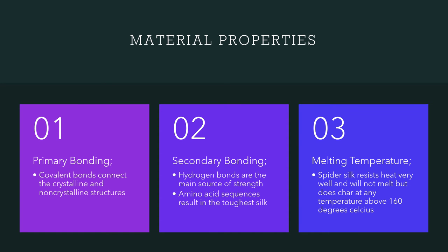Material Properties — Primary Bonding: Covalent bonds connect the crystalline and non-crystalline structures. Secondary Bonding: Hydrogen bonds are the main source of strength, and amino acid sequences result in the toughest silk. Melting Temperature: Spider silk resists heat very well and would not melt, but does char at any temperature above 160 degrees Celsius.